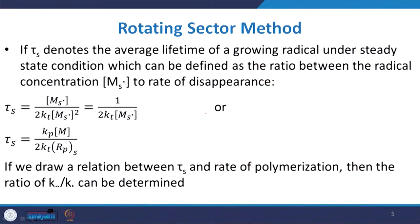In the rotating sector method, tau_s denotes the average lifetime of a growing radical under steady-state conditions. It is defined as the ratio of radical concentration [M·] to the rate of disappearance: tau_s = [M·] / (2KT [M·]²) = 1 / (2KT [M·]). This equals Kp [M] / (2KT Rp). By drawing a relation between tau_s and the rate of polymerization, the ratio Kp/Kt can be determined.